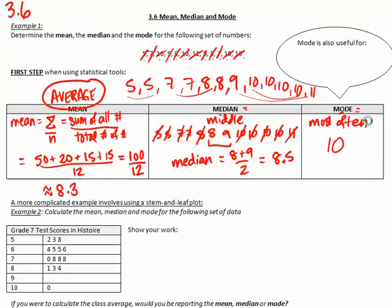The mode is also useful for non-numerical data as well. Non-numerical data could be colors, type of cars, or favorite subjects. Whenever I'm not using numbers, I can use mode for that.